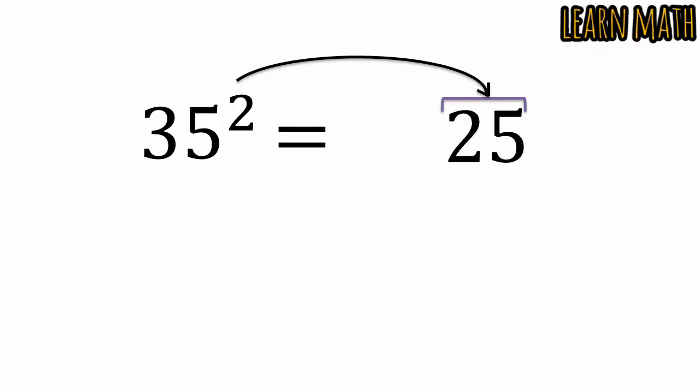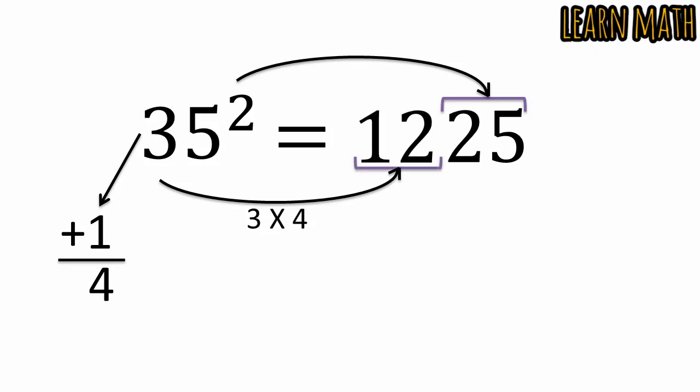The second step is we will add plus 1 with this 3. So 3 plus 1 is equal to 4, and then we will multiply 3 into 4. That is 12. So the square of 35 is equal to 1225.